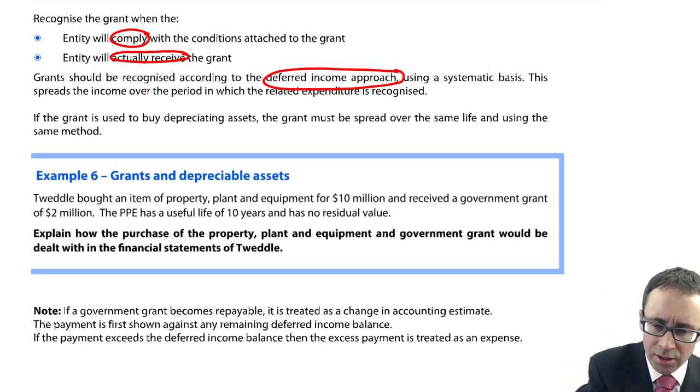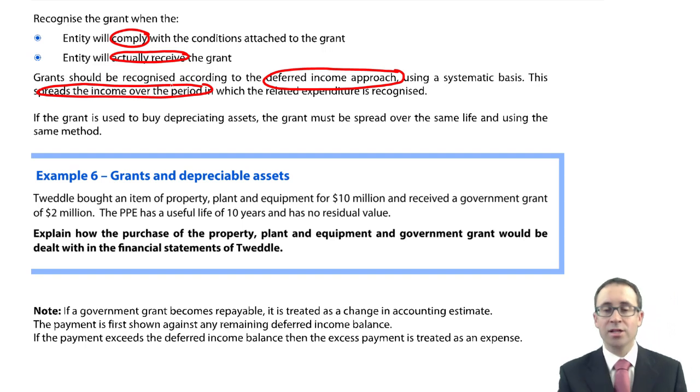And then what you do there is you spread the income over the period in which the expenditure is recognised. So if it is a capital grant to do with the purchase of PPE, then you spread it over the depreciable life of the assets. If it is there to do with a revenue grant,